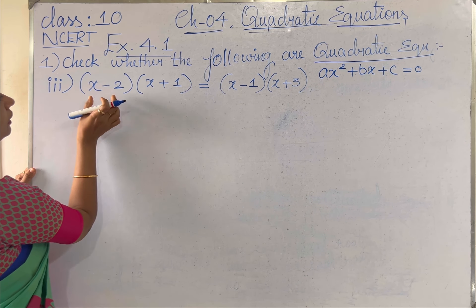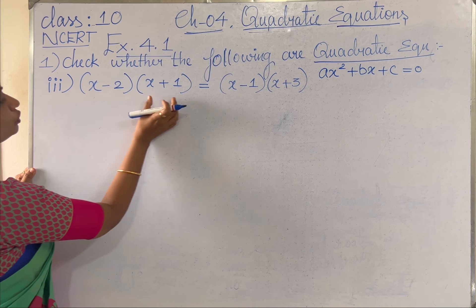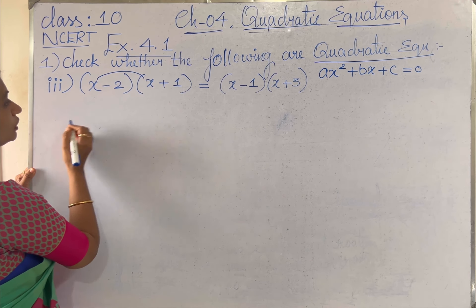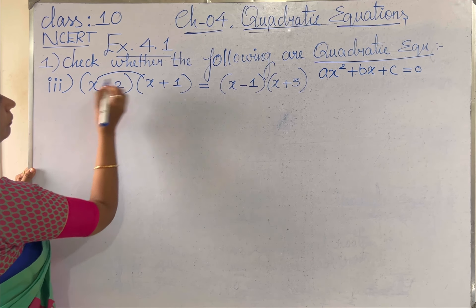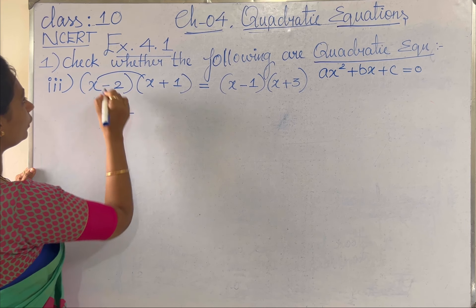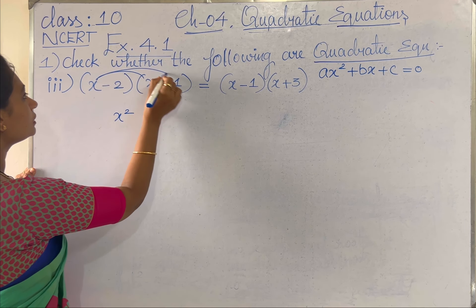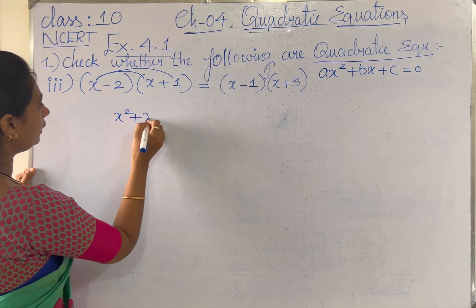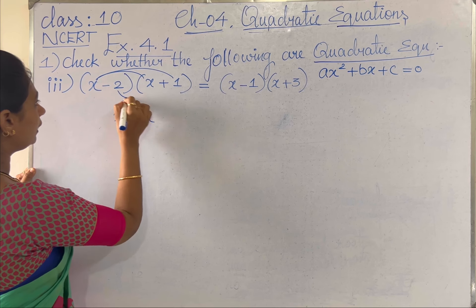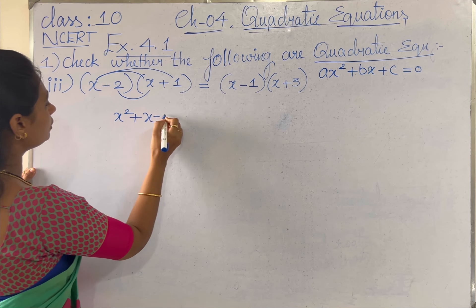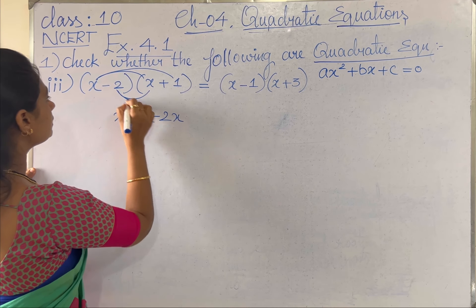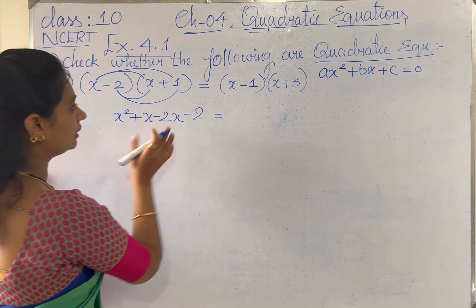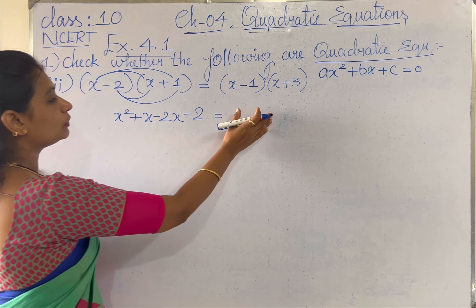We need to multiply (x minus 2) into (x plus 1). We multiply first term with first term: x times x gives x². First term with second term: x times 1 gives x. Second term with first term gives minus 2x. Second term with second term gives minus 2, on the left hand side.